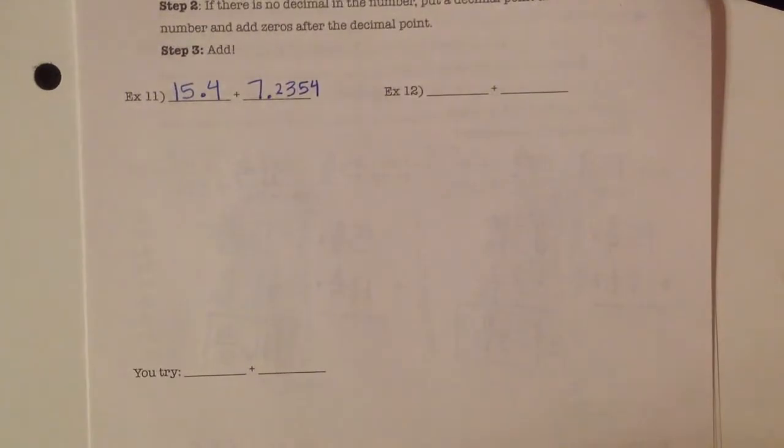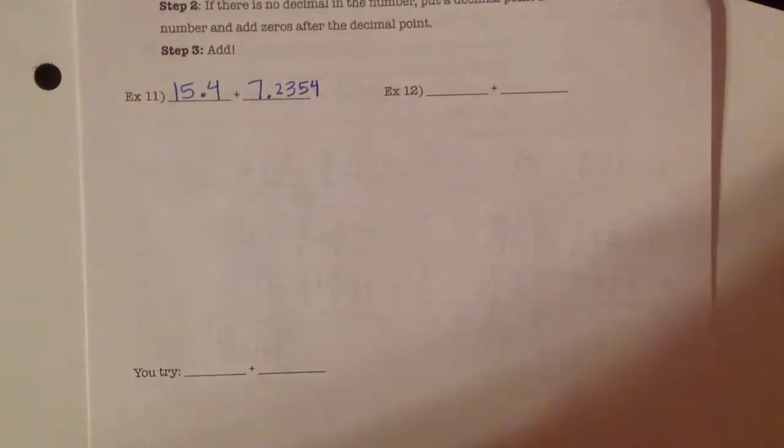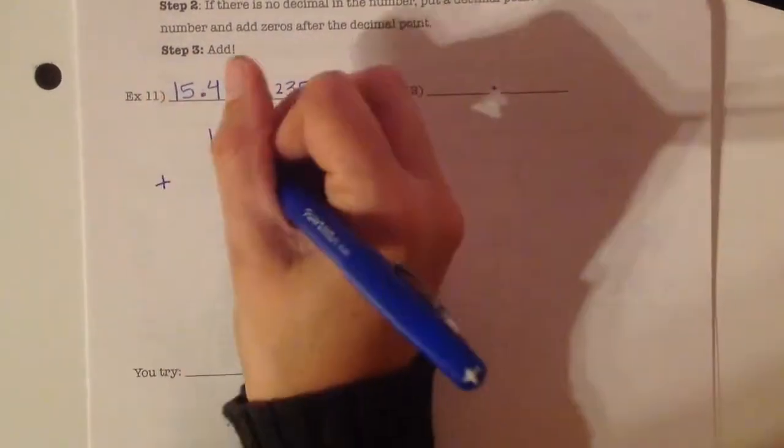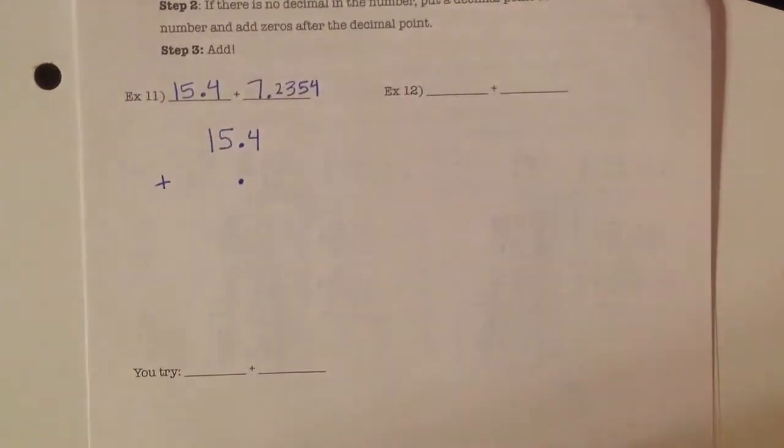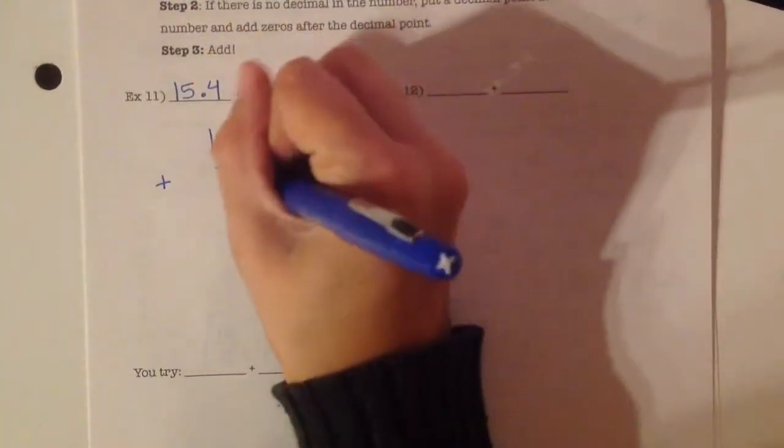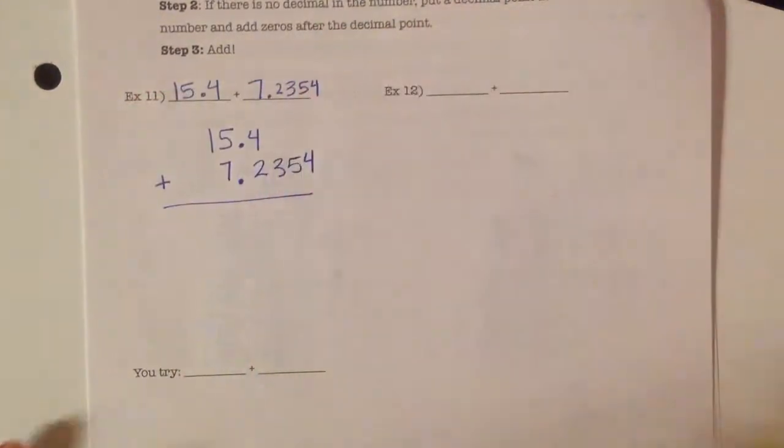Since it's addition, the order does not matter. But what matters is that those decimal points have to line up. So, first I'm going to write the 15.4. Then, remember that my decimal point has to line up. So, in this number, the 7 goes to the left. The 2, 3, 5, 4 go to the right.